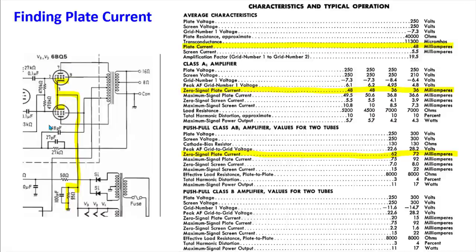This is why matched tubes are so important in a push-pull amplifier. If one tube is older and weaker, it pulls less current than the other. Since the current through the shared resistor is divided between them, one tube puts out less power than the other, causing distortion on the output. This is the Dynaco Stereo 35 amplifier: with -8.4 volts on the grid you get 62 milliamps for two tubes, or with -36 volts you get 72 milliamps — divide by two per tube.